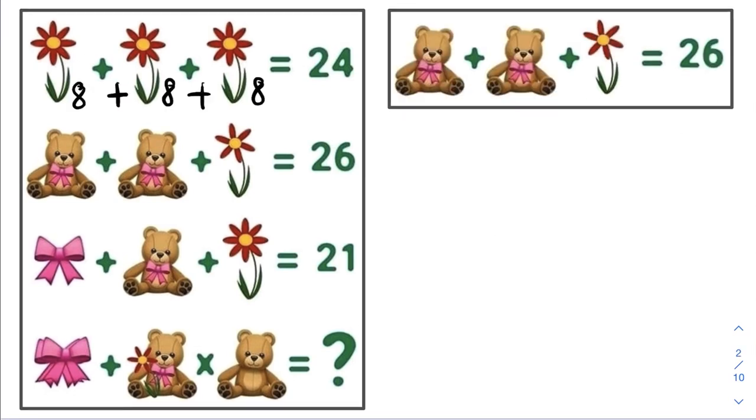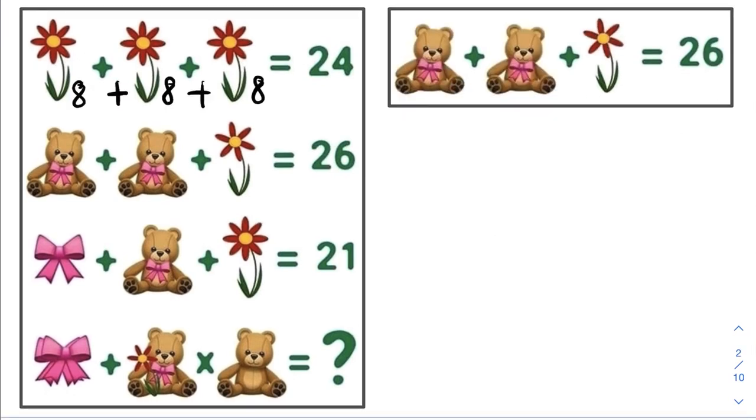Now let's move on to line 2. For the first line, a flower with 8 petals has a value of 8. So we can conclude that in line 2, a flower with 6 petals has a value of 6. So here we have plus 6.